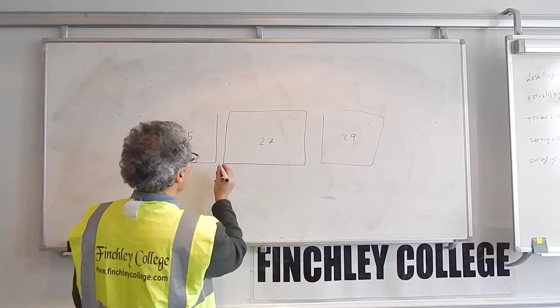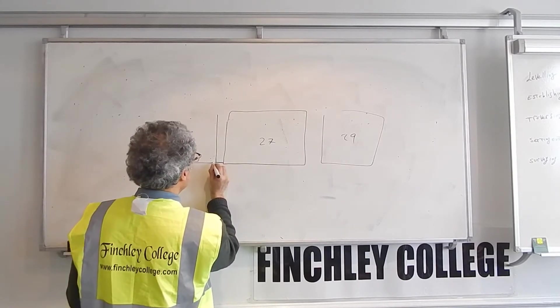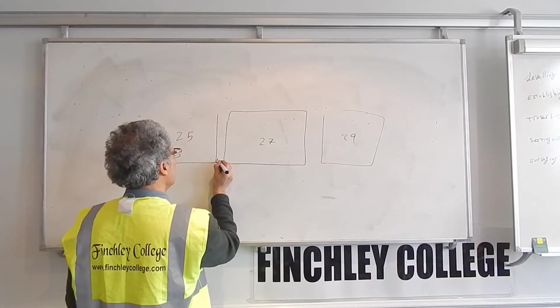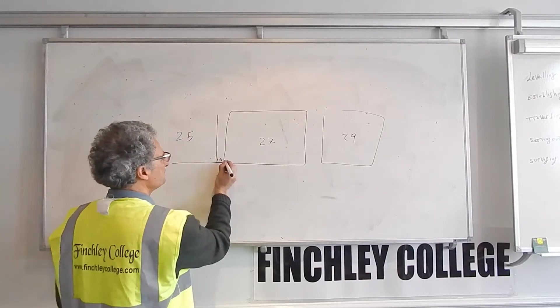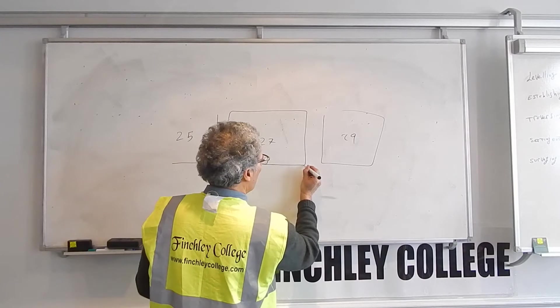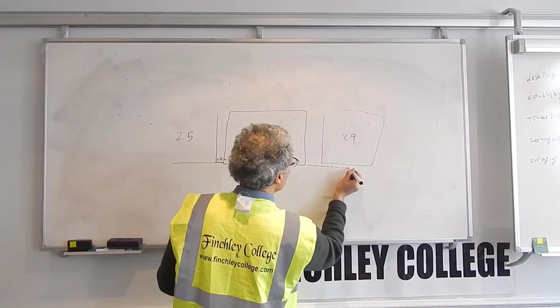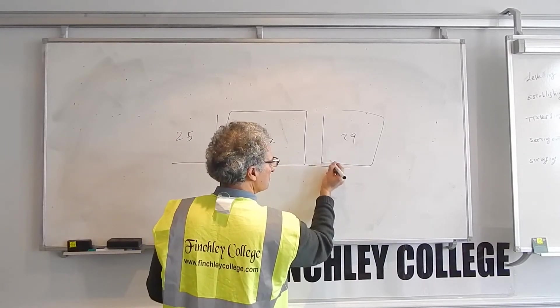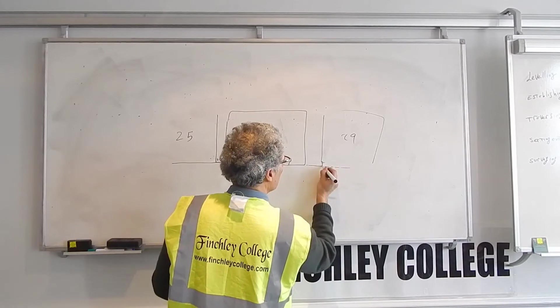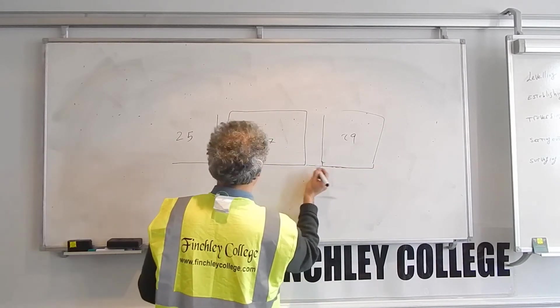But what the architect has told you, for example, they tell you the distance between this house and this house should be 1.5 meters. And for example, I want this house to line up with the next door house, make it easier.